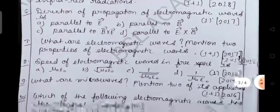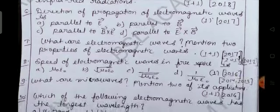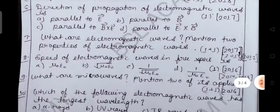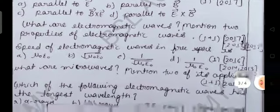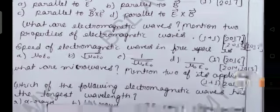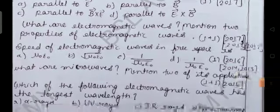Now next, what are electromagnetic waves? Mention two properties of electromagnetic waves. This is your most important question of this chapter asked in 2017, 13, 12. And here you can see its marking scheme one plus one.